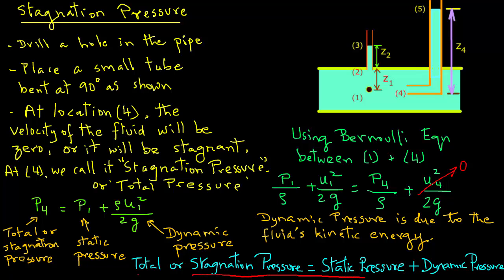To summarize: pressure and static pressure mean the same thing and can be measured with a sensor. Dynamic pressure is due to the fluid's kinetic energy or velocity. Total pressure and stagnation pressure also mean the same thing — they represent the pressure at a point where the fluid has come to stagnation, i.e., velocity is 0.